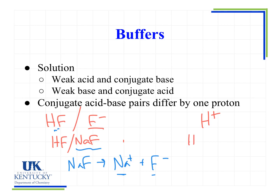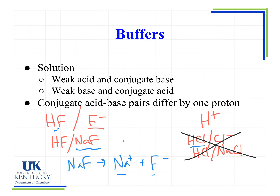Let's look at another example: HCl and Cl minus, which might also be written as HCl and ACl. Can this be a buffer? This is actually not a buffer because HCl is a strong acid, and strong acids and strong bases cannot form buffers.